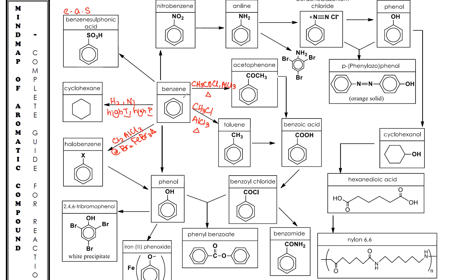Some students remember the back part but forget the front part, so you have to constantly do your revision. For benzene to become nitrobenzene, you must write both concentrated HNO₃ and concentrated H₂SO₄ under reflux. Both 'concentrated' words must be included — that is important.